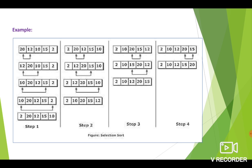Consider we have an array consisting of elements 20, 12, 10, 15, 2. The first element is 20 and it is selected. It is compared with all the remaining elements in the array. If any array element is less than the selected element, then you have to do swapping.